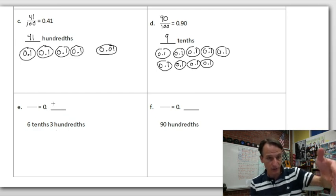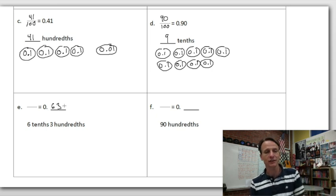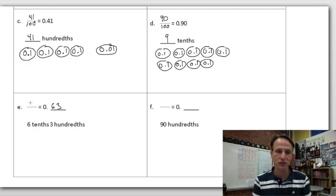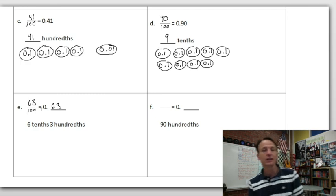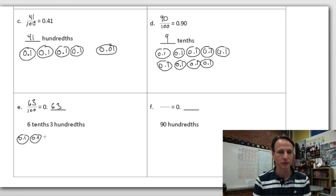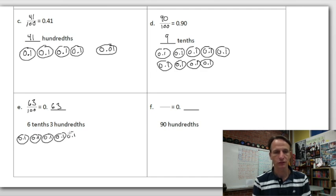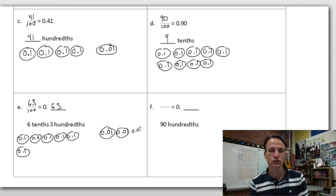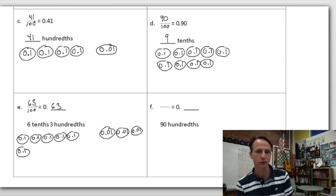You'd be crazy to draw 63 pennies, so I'll draw six tenths — rows of five: five, six — and then three hundredths as pennies (0.01). There we go: six tenths, three hundredths, 63 cents, 63 hundredths.